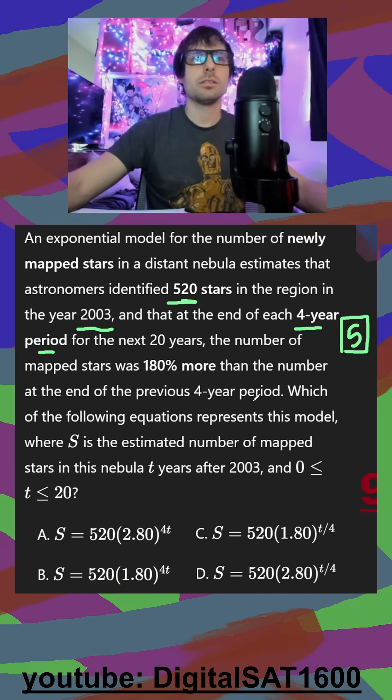Which of the following equations represents this model where S is the number of mapped stars t years after? So I want to focus on the t years first. We can see that the initial is 520 in all of them, so that's not going to help.